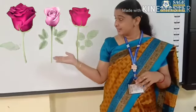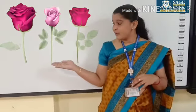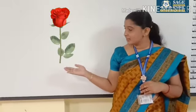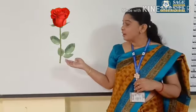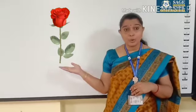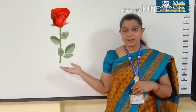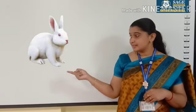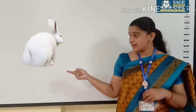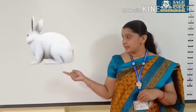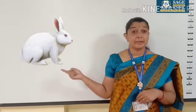R for rabbit. See this? This is a rose. R — rose. Okay? And now see this. This is a rabbit. R — rabbit.